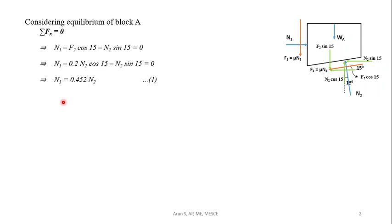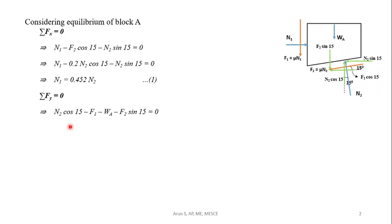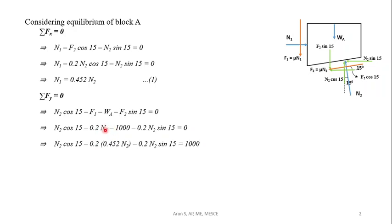For the vertical equilibrium of block A, ΣFy = 0: N2 cos 15 minus F1 minus W_A minus F2 sin 15 equals zero. Substituting F1 = mu N1 = 0.2 N1, F2 = 0.2 N2, and W_A = 1000 N, then replacing N1 with 0.452 N2 from equation one, this equation has only one unknown, N2, which can be solved.